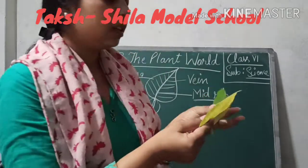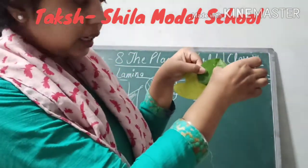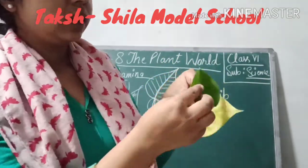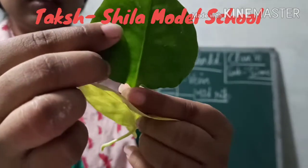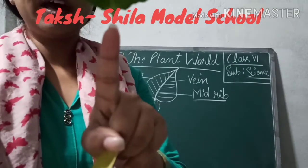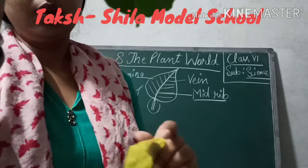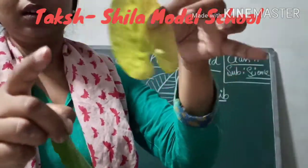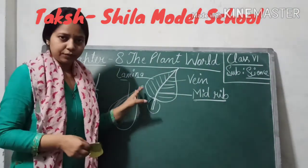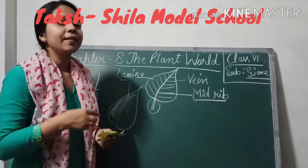You can look into this. In the center is the mid rib, and on the sides the veins are visible. The portion by which the leaf is attached to the plant is the petiole. So this was the structure of leaf. Now students, one thing you can see is the arrangement of veins.